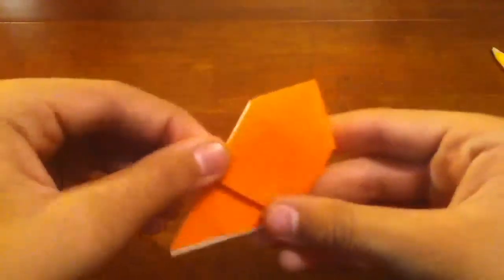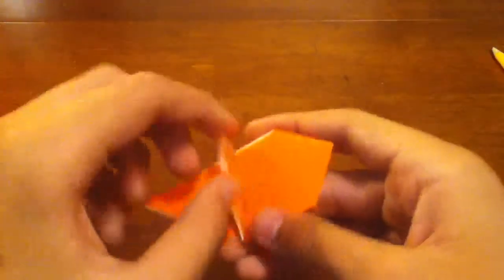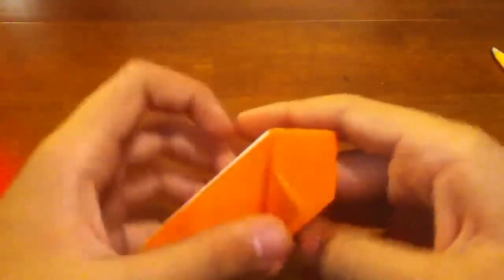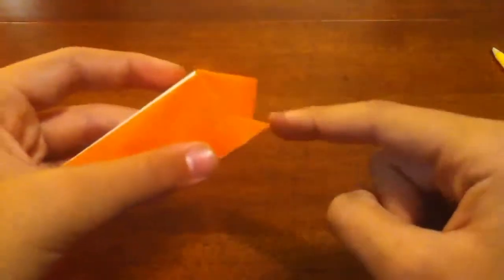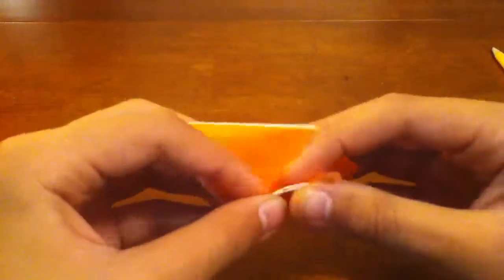And then make another rabbit ear fold like this. Oh sorry. Make sure that this point is facing that way, away from the face right here. Just like that.